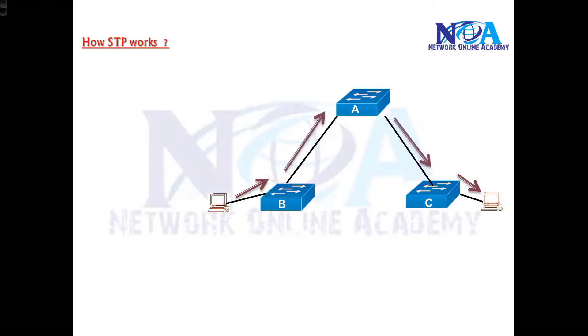Now just to avoid that, we connect one more link. Here I am assuming that we are connecting one more link from switch B to C. Now this will create loops.